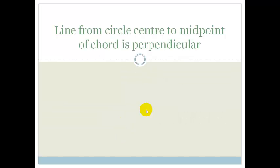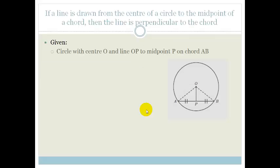The theorem says: the line from the circle's center to the midpoint of a chord is perpendicular to the chord. Now, it seems very scary when you look at it like that, but if I show you this little drawing...